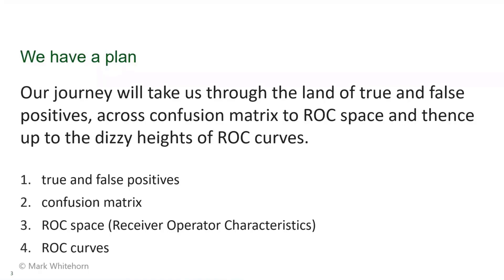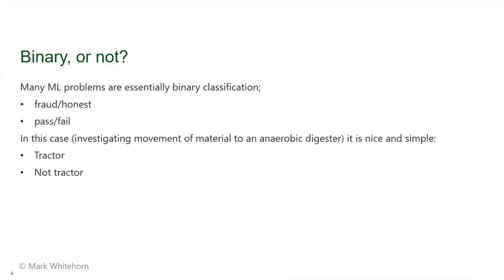A lot of machine learning problems essentially come down to binary classification - we're trying to decide: is this person honest or are they trying to commit fraud? Does this thing pass or fail some test? Not all ML problems can be split into binary classification, but if we have four categories we can often split them - build a system that tells you whether it's A or not A, and another for B or not B.